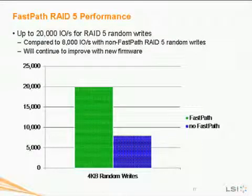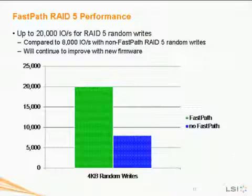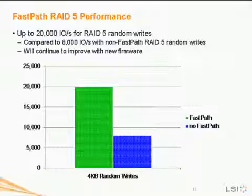With RAID 5 write performance, those operations also show significant performance advantage. Today we're currently getting approximately 20,000 IOs per second in RAID 5 random writes with FastPath enabled. The same configuration with FastPath disabled is only reaching approximately 8,000 IOs per second. With each new firmware release, we plan on improving that number until we get to the next generation of product where we'll have a significant jump in performance.